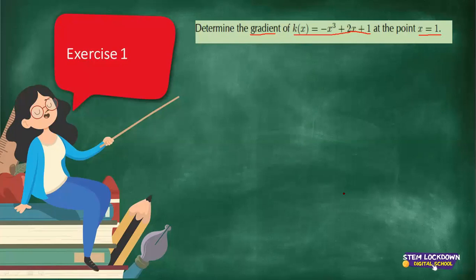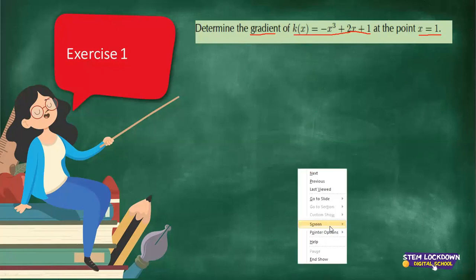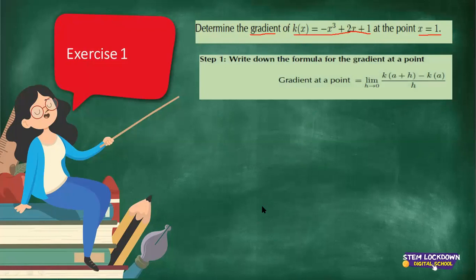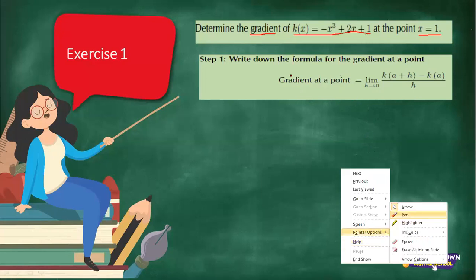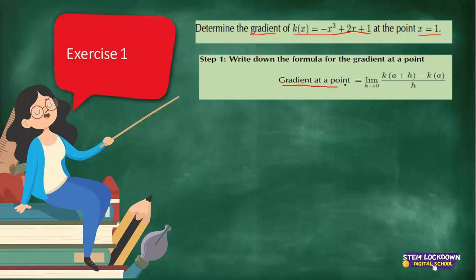What you need to do is write down your gradient formula, because we are focusing on a specific point. This is our gradient at a point. Between two points it would be the change in y over change in x — y2 minus y1 divided by x2 minus x1 — but when we're given a point on a curve, we use the limit formula.